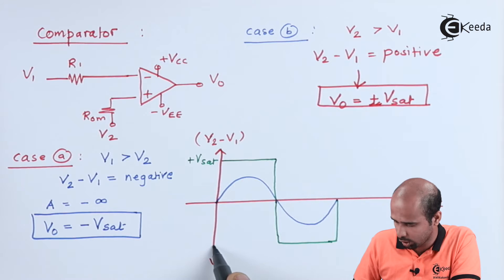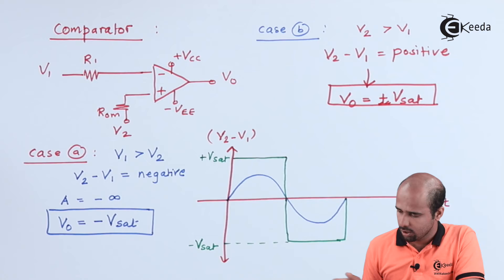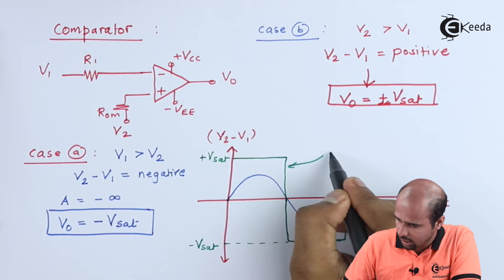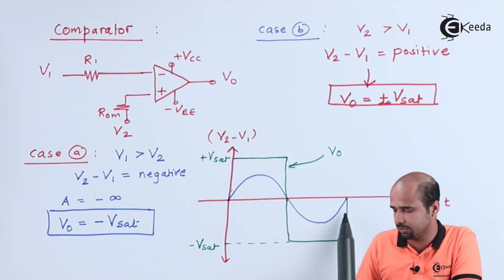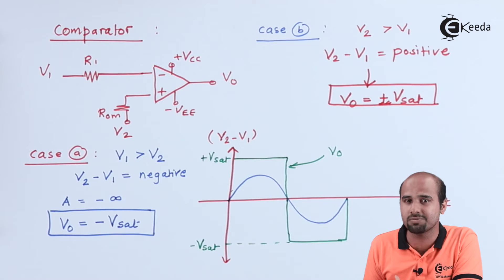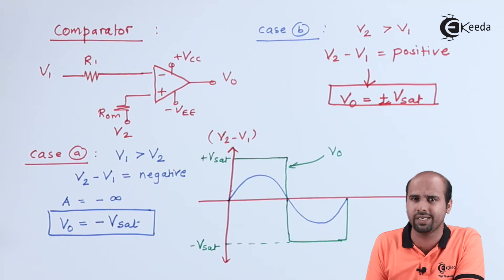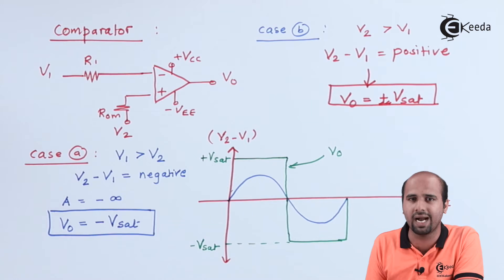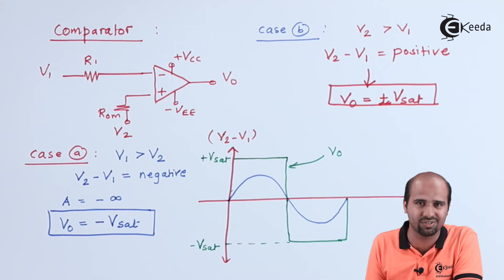In the second half cycle, V1 dominates over V2, so VO becomes minus Vsat — giving an abrupt change in the output voltage. This is the ideal output voltage waveform for the comparator concept — the output changes with respect to the difference between the two input voltages.